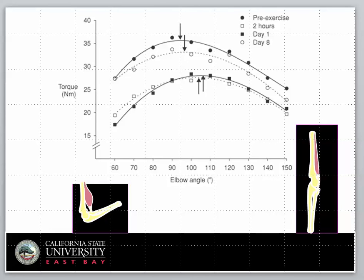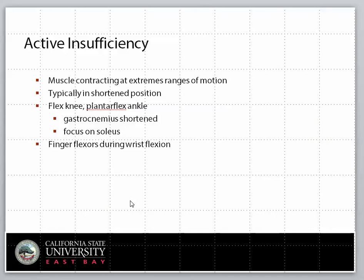If we take that into a practical application, this is how you can change which muscles you're focusing on in the fitness facility or when working out. This is due to something called active insufficiency. Active insufficiency is when a muscle is contracting at extreme ranges of motion — either too short or too long. When a muscle is too short, all its sarcomeres are too short; they cannot form enough cross bridges and cannot generate force. When a muscle is too long, the sarcomeres are stretched out, cross bridges cannot be formed, and force production decreases.